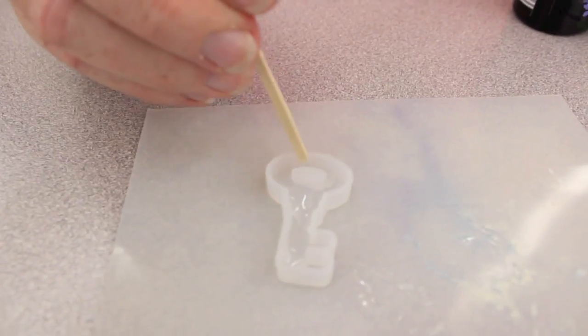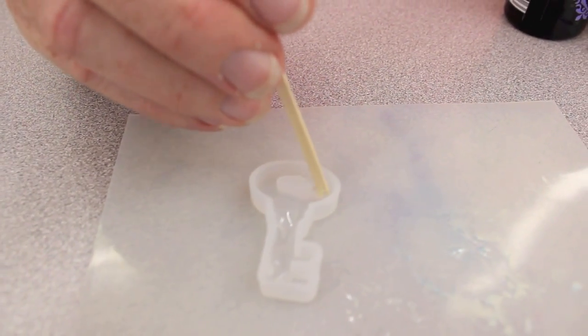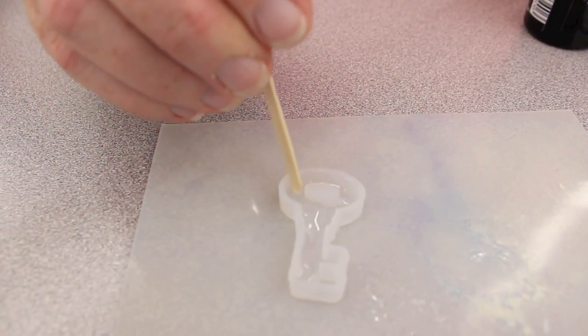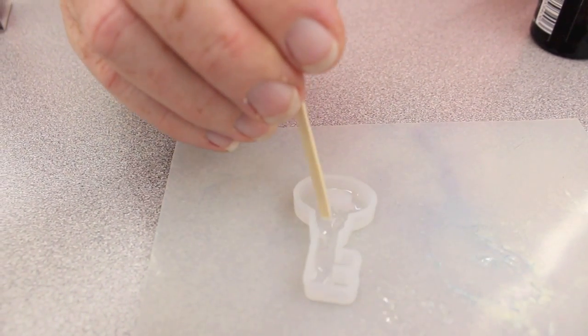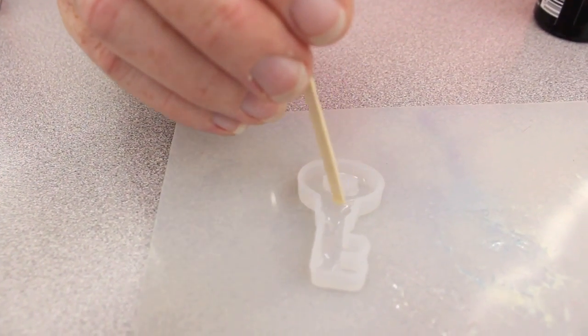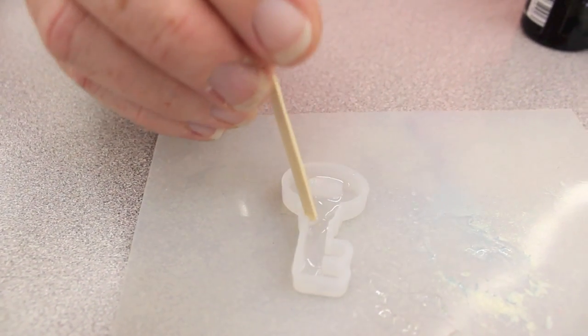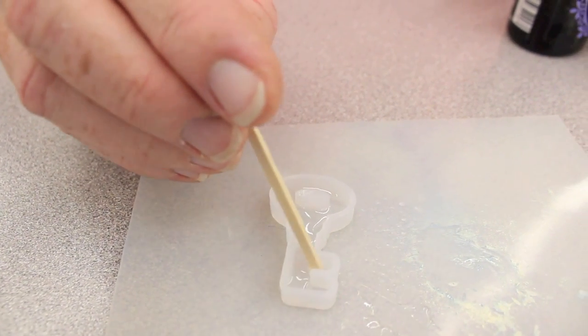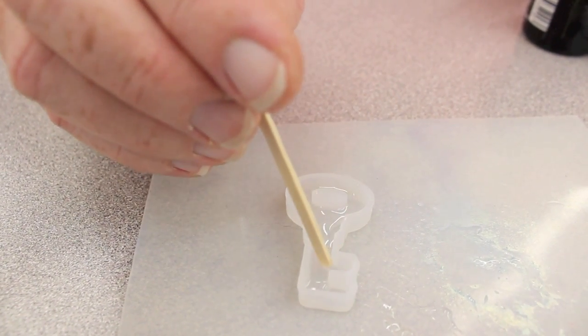Doesn't take a lot, we just want to get a nice little layer in there and you don't want to use a lot of whipping motions because you don't want to create bubbles. Bubbles are easy to get rid of, you can just take a toothpick or a pen and pop them.